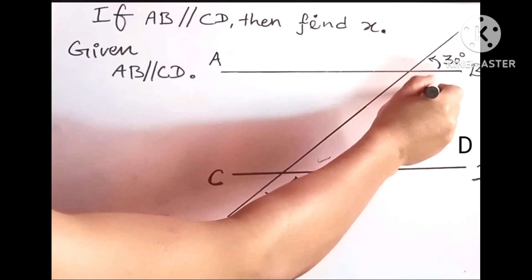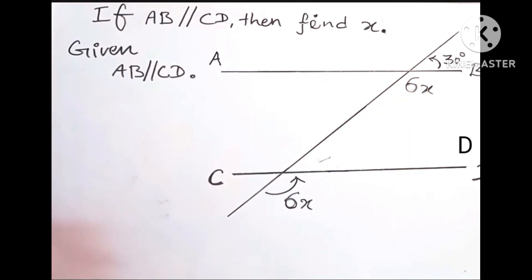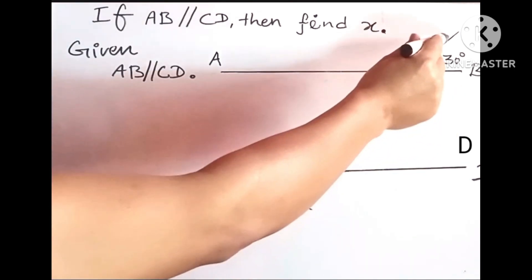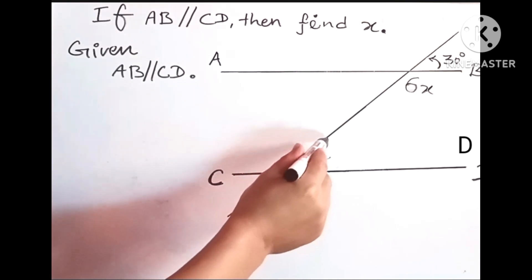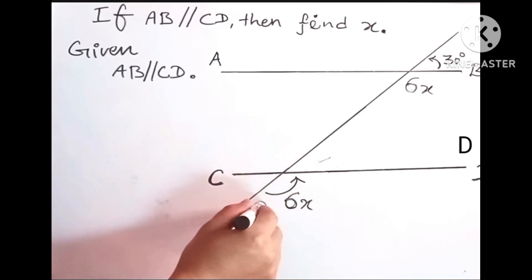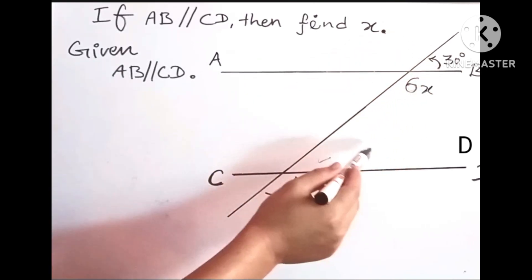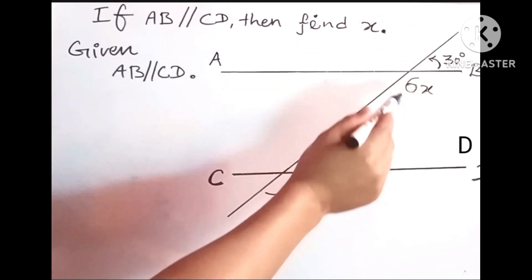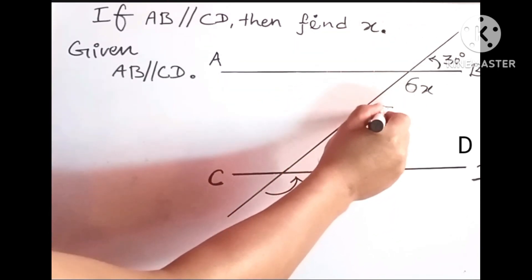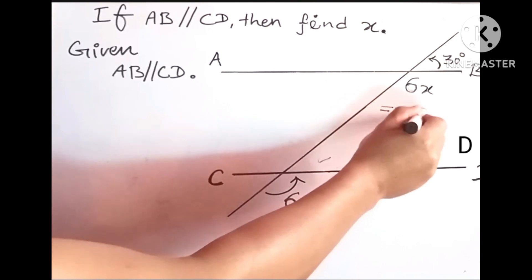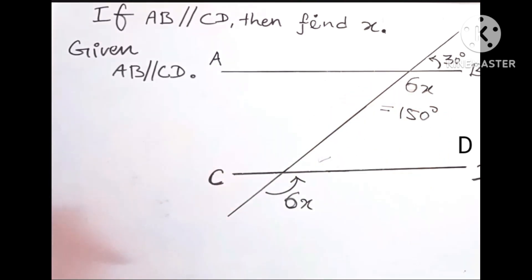And this angle also must be 6x. We know this is a transversal and this is a straight angle which is 180 degrees. Therefore, the value of this 6x must be 150 degrees because the sum of 30 and 150 is 180 degrees.